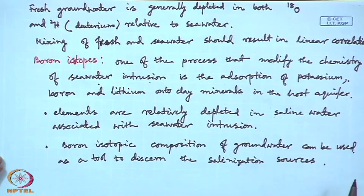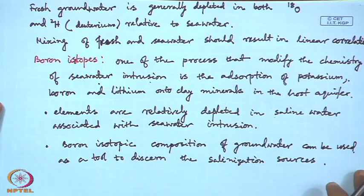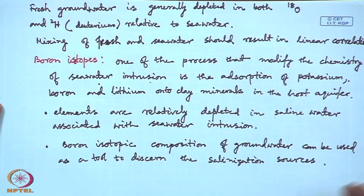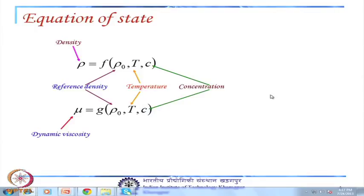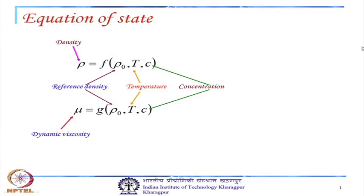These are the parameters with which salt water intrusion can be identified. Next, in density-dependent flow, the density depends on the reference density, temperature, and concentration. Similarly, dynamic viscosity is also a function of temperature and concentration. These two can be treated as an equation of state for solving both the flow and transport equations.